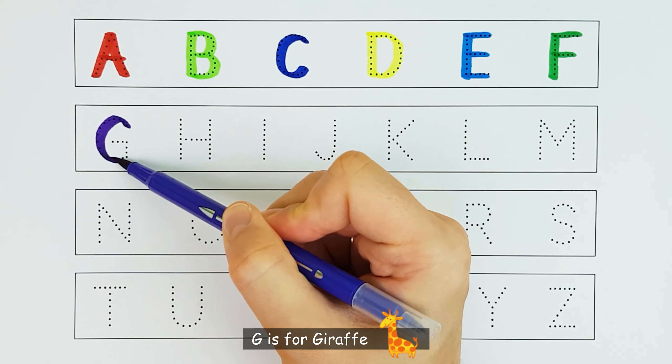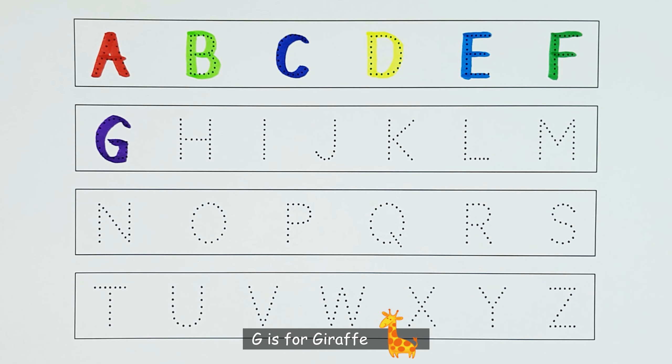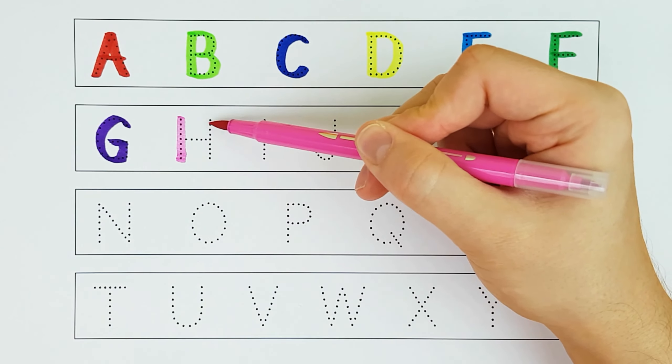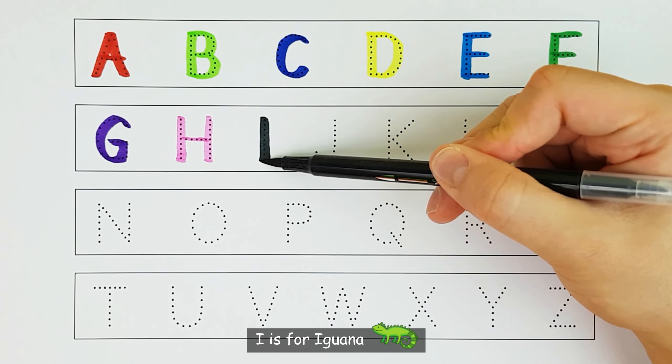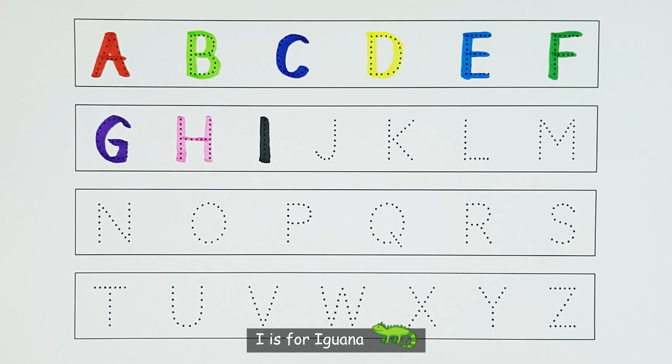G. G is for giraffe. G. H. H is for hippopotamus. H. I. I is for iguana. I.